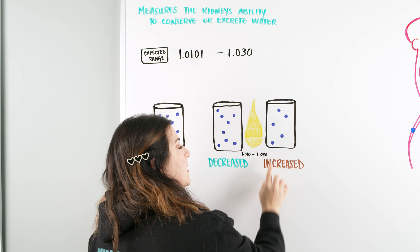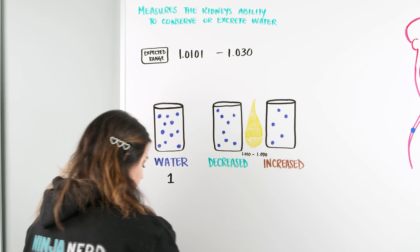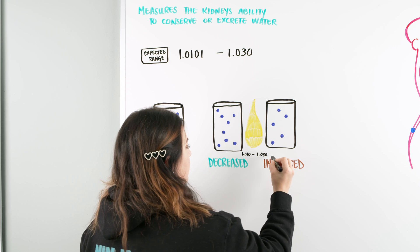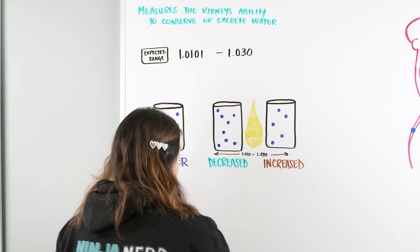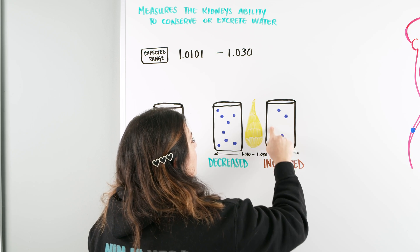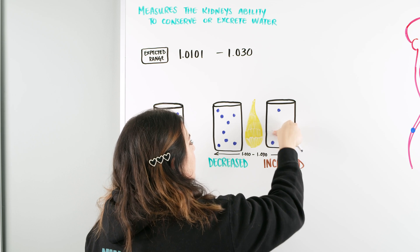On the other side, if it's increased, if it's higher than this, so on this range, if it's increased, then we are going to have maybe some less water. But that's not the only thing that's in urine.